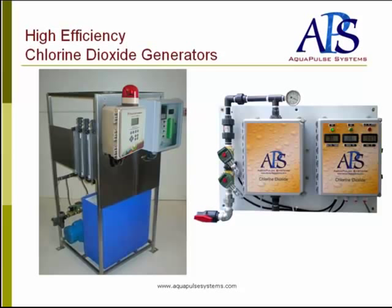From that tank, the chlorine dioxide can then be metered accurately to the point of application. On the right, you see the two-chemical systems, which produce chlorine dioxide very efficiently and very effectively, discharging into a tank from where it can be distributed to the points of application.